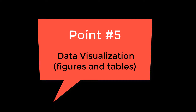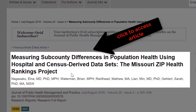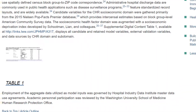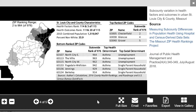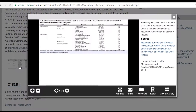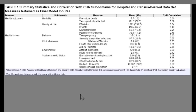The last important point about the results section is data visualization. Let's take a look at this article in JPHMP, measuring sub-county differences in population health using hospital and census-derived datasets. Many journals, including JPHMP, allow readers to download tables, figures, and images separately from the article for inclusion in presentations. More visually informative and attractive figures will be more likely disseminated. Think carefully about the manner in which data are presented in tables. Tables should stand alone, as many readers prefer to glean your results from tables rather than the text.